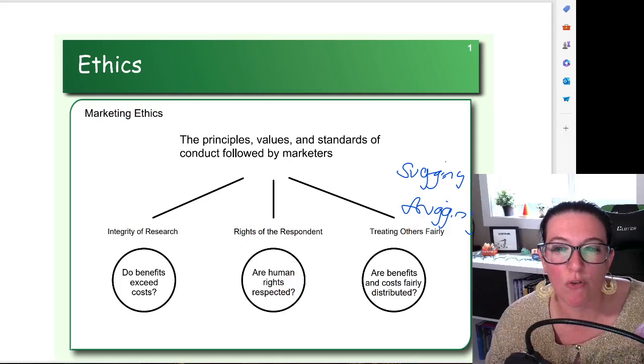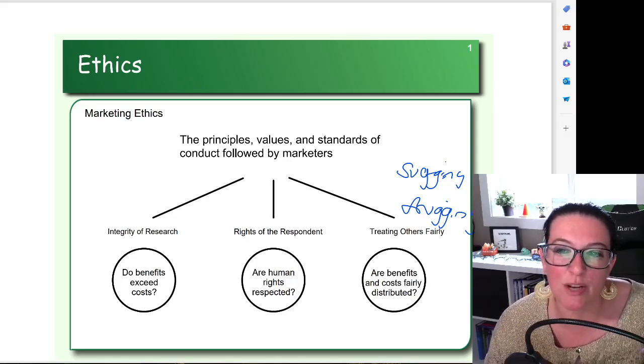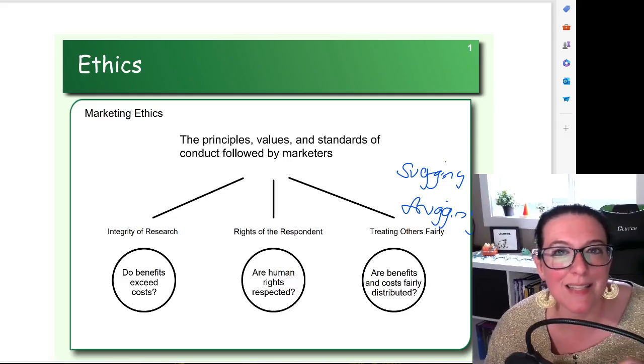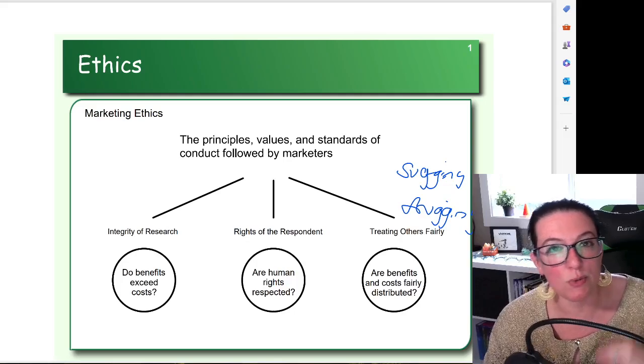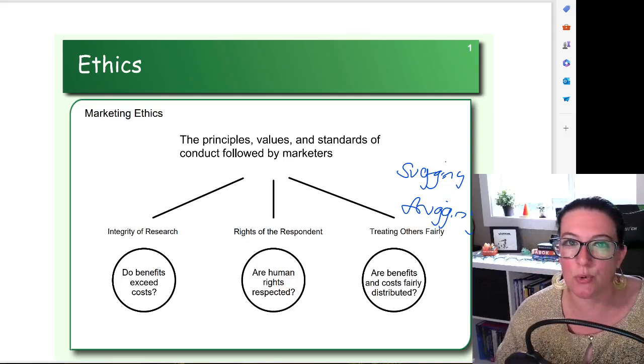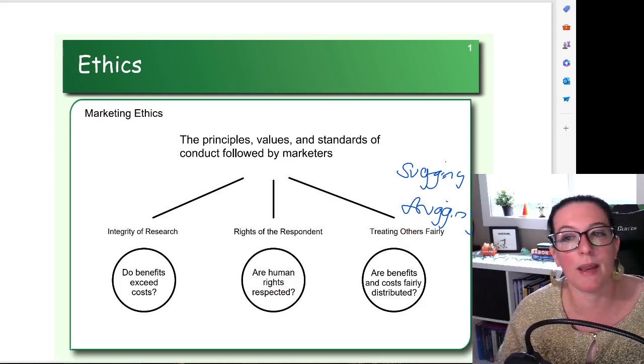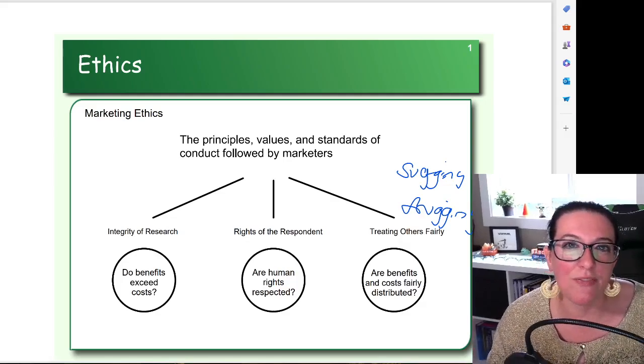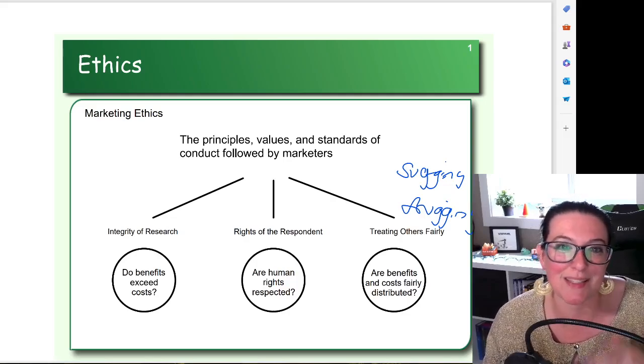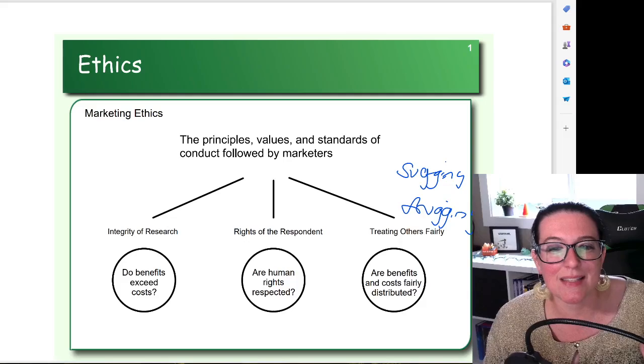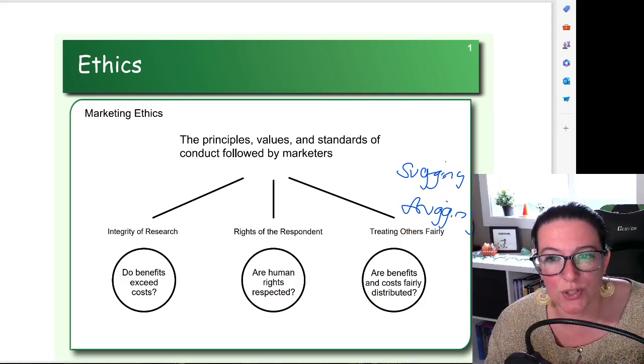If I'm really just collecting information in my surveys so I can come back and sell products to you later, that is unethical research. You tell people you're using that research to improve the organization or make social change, and if instead it's just so you can sell stuff or you sell that list of participants to somebody else so they can sell stuff, that is unethical. Sugging - S-U-G-G-I-N-G - is unethical research.